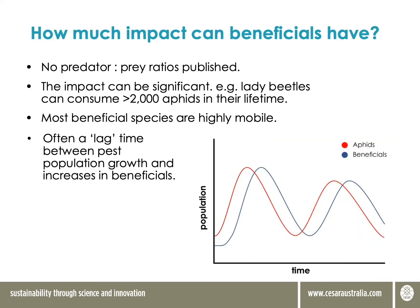Spiders are one of the most important natural enemies we have in the paddock, and they are also generalists. We don't fully know what the impact is of generalist natural enemies in a crop — there are still gaps in our knowledge — although their efforts in the paddock are very steadily becoming recognised and appreciated more and more.